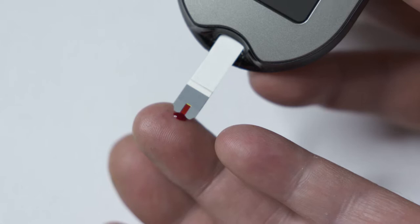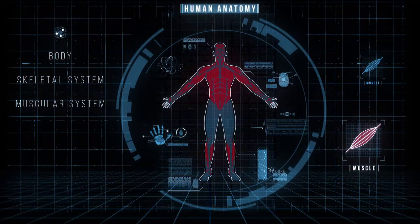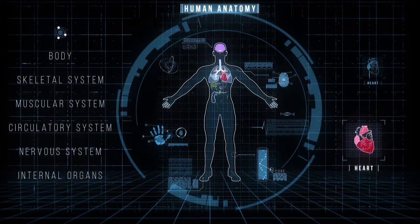Your blood pressure is regulated. Your blood glucose is regulated. So if we understand how it works, then we can understand how it doesn't work. System identification is a mathematical field that allows you to estimate or measure things that you cannot measure otherwise. Give me what you can measure, I give you what you cannot measure.